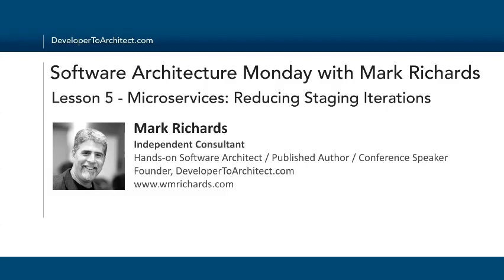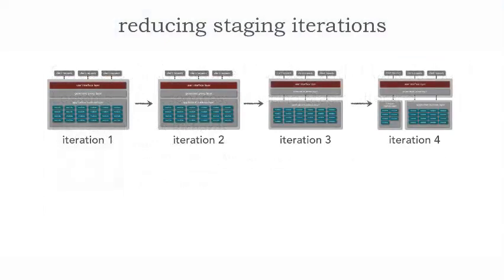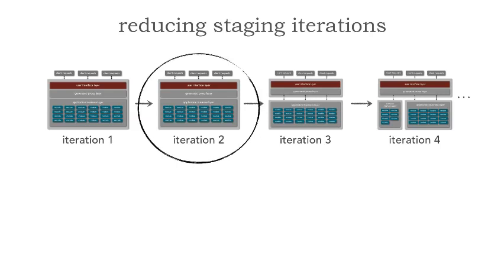Today we're going to continue on with microservices and look at one other topic which is reducing staging iterations. Here's a typical iteration plan for the conversion to service-based architecture or even microservices. We've got four iterations denoted here — iteration one has our monolithic layered architecture, iteration two visually has no change in the architecture, iteration three we're separating the UI from the back end, and iteration four starting to create services. This is a good way of identifying a staging iteration.